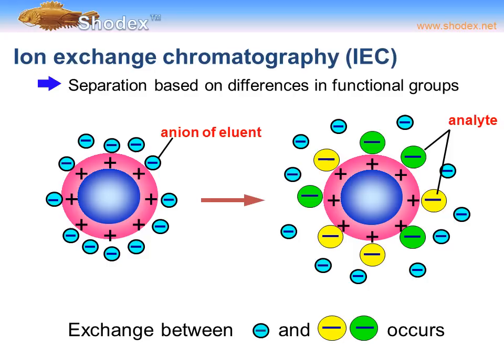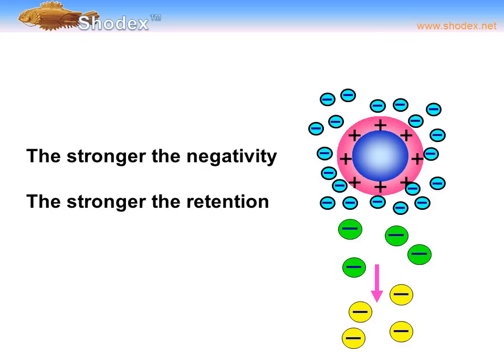For high molecular weight, high polarity compounds, we can use size exclusion chromatography or ion exchange chromatography. In ion exchange chromatography (IEC), separations are based on differences in functional groups. In the diagram, we see a particle comprising the column's solid support surrounded by an anion of the eluent. If we have analytes that are more strongly anionic than the anionic solvent, they will interact more strongly with the solid support — an exchange between the anionic eluent and the anionic analyte occurs. This is the basis of ion exchange chromatography.